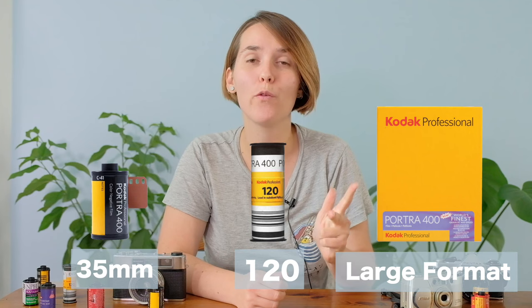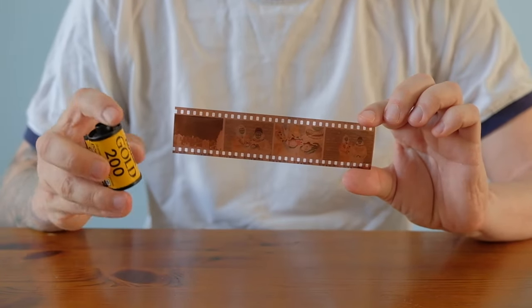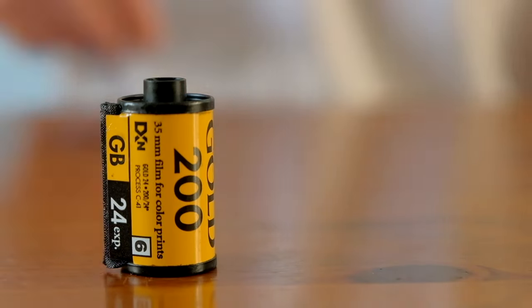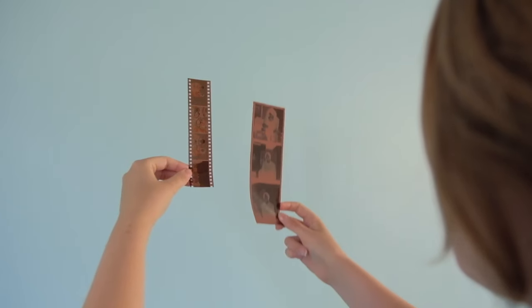If we want to classify films by size, then we have three big brothers: 35mm films, 120mm films, and large format films. 35mm is the most popular format. It has perforations on both sides and comes inside a canister. They're super easy to find and you can find very cheap ones. You can get 35mm films with 24, 36, or even 12 exposures, although 12 is quite rare.